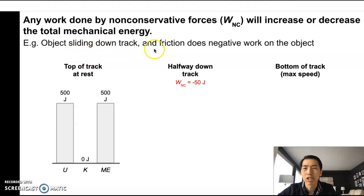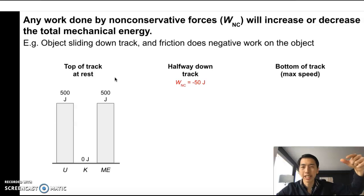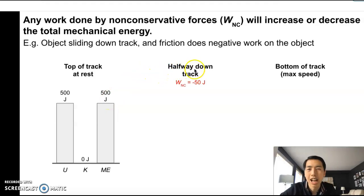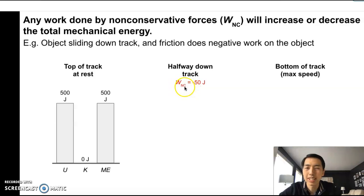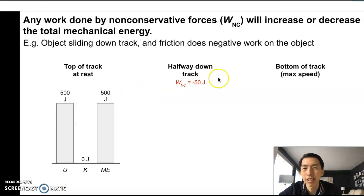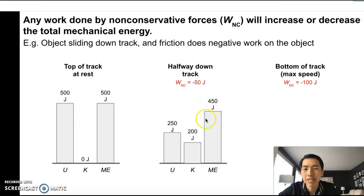So if we go back to this object sliding down a track and friction does negative work, the graph at the beginning is still the same. We're starting at the top of the track, letting it go from rest. Kinetic energy is zero joules, gravitational potential is 500 joules, making total mechanical energy U plus K equal to 500 joules. After it slid halfway down the track, let's say friction did negative 50 joules of work — W_NC equals negative 50 joules. That negative 50 takes away from the total, so 500 goes down to 450. The gravitational potential energy is cut to 250 joules, the total must be 450, so the kinetic energy has to be 200 joules. That's different from the frictionless case, where it was 250 and 250 making 500.